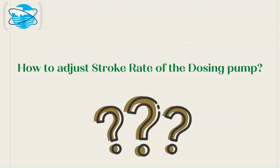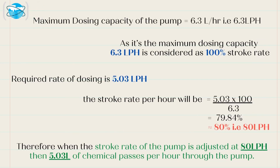How to adjust stroke rate of the dosing pump: if the maximum dosing capacity of the pump is 6.3 liters per hour, that is 6.3 LPH, then 6.3 LPH is considered as 100% stroke rate. As our required dosing is 5.03 liters per hour, the stroke rate per hour will be set to 80%. That means when the stroke rate of the pump is adjusted at 80%, then 5.03 liters of chemical passes per hour through the pump.